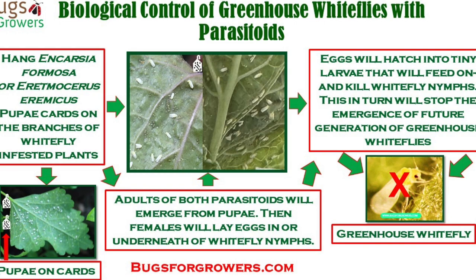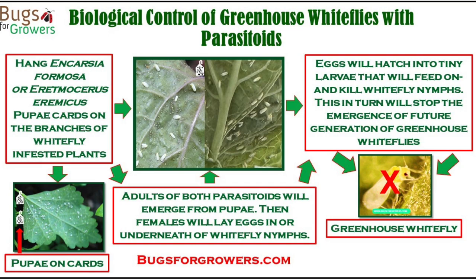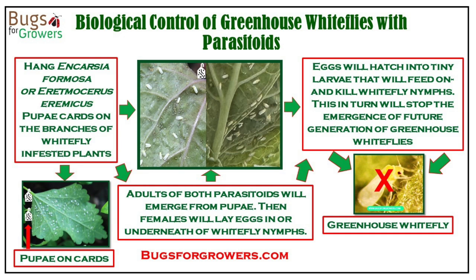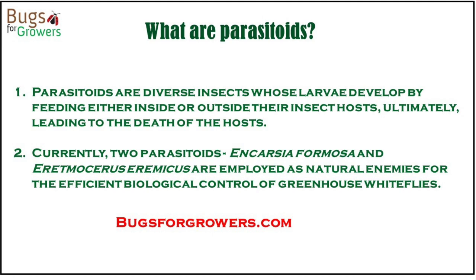Therefore, different biological control agents such as parasitoids are recommended for controlling whiteflies in the greenhouse. Parasitoids are tiny wasps that can parasitize whiteflies and kill them.